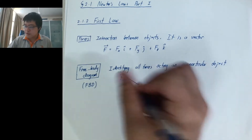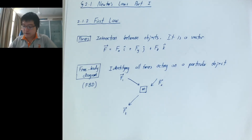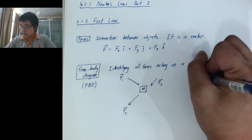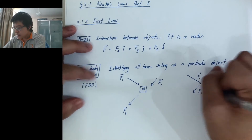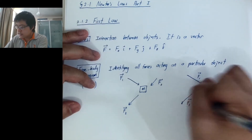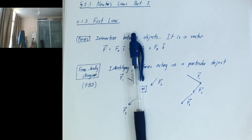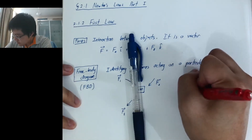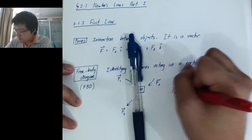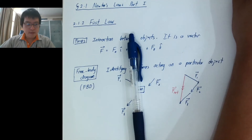Let's call some general forces F1, F2, and maybe F3 going the other way away from the object. That is the free body diagram. The purpose of drawing it is to figure out what the net force is. The net force is the vector sum — so if I have F1, F2, and F3 acting in different directions, the net force is the resultant vector from adding them all up.